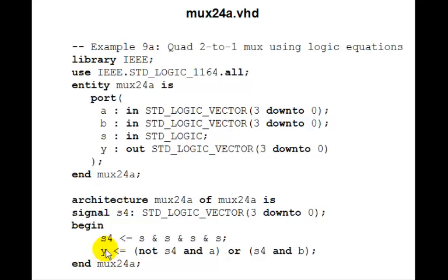So this single logic equation will expand into four logic equations. Namely, y3 is not s3, which is just s and a3, or s and b3. And similarly, y2, y1, y0 will be not s and a0, or s and b0. So this is a little trick you have to remember. So that will work.